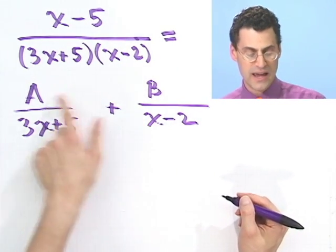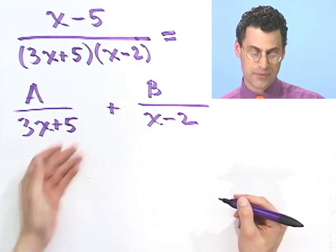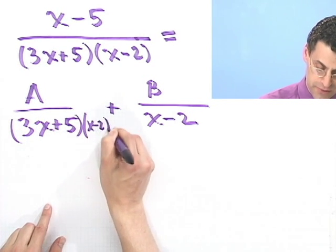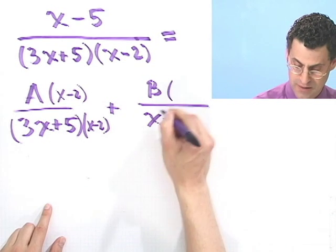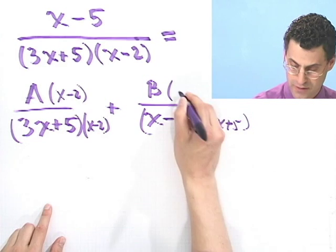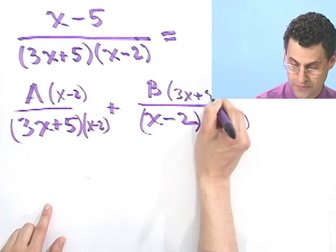Now to figure out what A and B should be, let's just add these up. I have to get a common bottom. So here I multiply top and bottom by x minus 2, x minus 2. Here I multiply top and bottom by 3x plus 5, 3x plus 5.